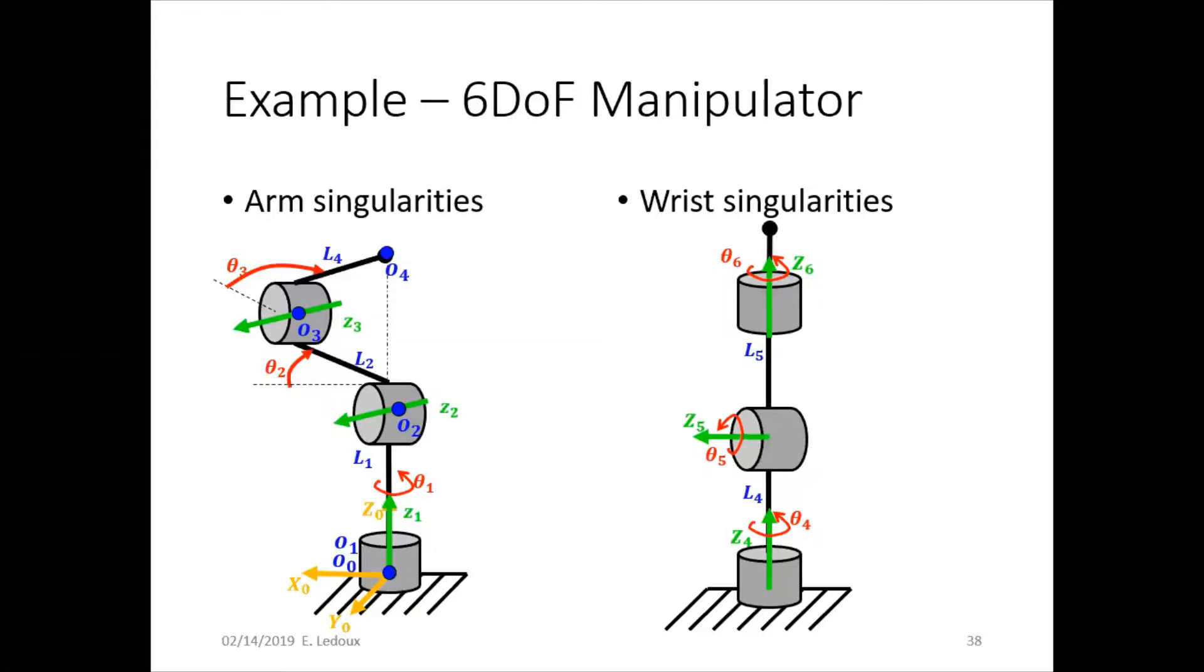And at the wrist singularity, it can spin around the vertical axis, but it can't move in the other directions when theta-5 is locked out.